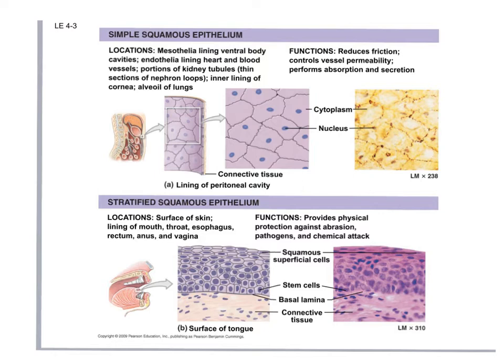We look at a combination of those terms: simple squamous, simple cuboidal, simple columnar, stratified squamous, stratified cuboidal, or stratified columnar. For the lab exam you need to know what they look like and where they are found — those are the two main things.